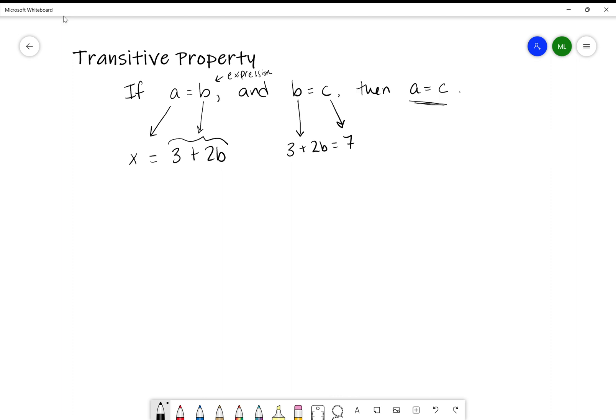So in conclusion, by the transitive property, just writing it all very mathematically neat, by transitive property we have, this is the imply symbol, I can say that x is equal to 7. Because again, it's creating that train: x is equal to 3 plus 2b, 3 plus 2b is equal to 7, so you can conclude, in conclusion by transitive property, that's why I wrote that down there, x is equal to 7.